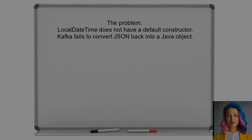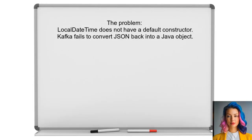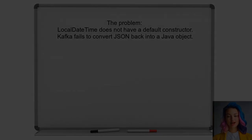The problem arises because the LocalDateTime class does not have a default constructor, which is required for deserialization. This means that when Kafka tries to convert the JSON back into a Java object, it fails. Understanding this is crucial for finding a solution.